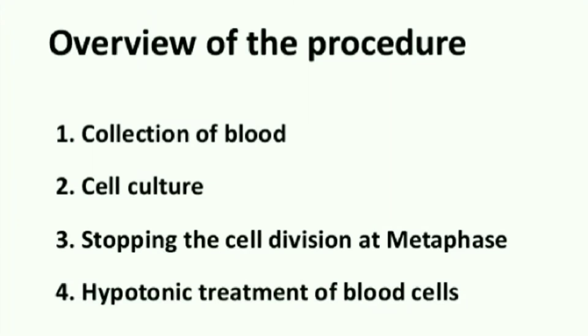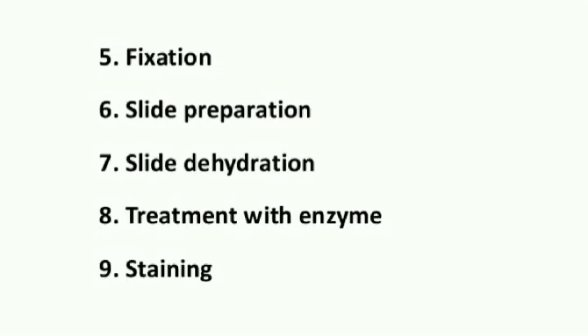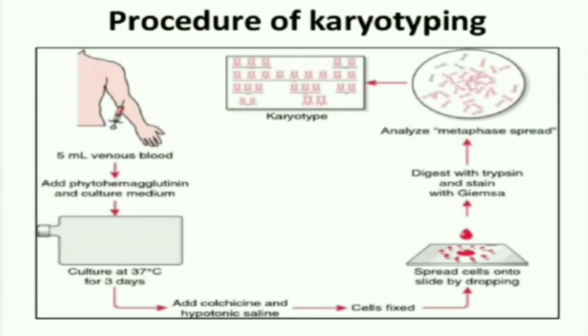Now let us discuss the procedure of karyotyping. Once the blood has been collected, cell culture is done. After cell culture, cell division is stopped at the metaphase stage. The next step is hypotonic treatment of the blood cells, followed by fixation, slide preparation, and dehydration of the slide. Finally, it is treated with an enzyme and stained.